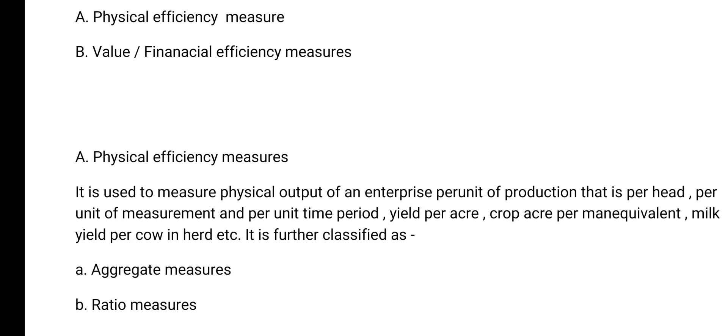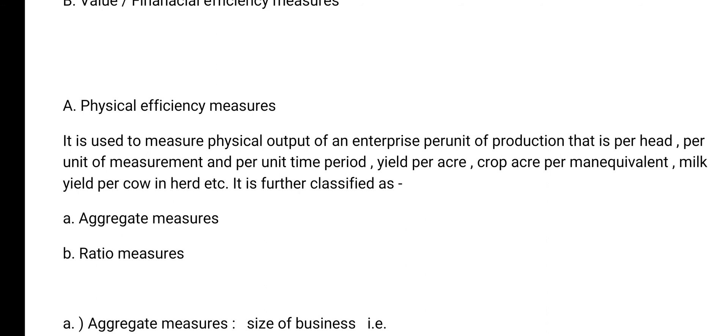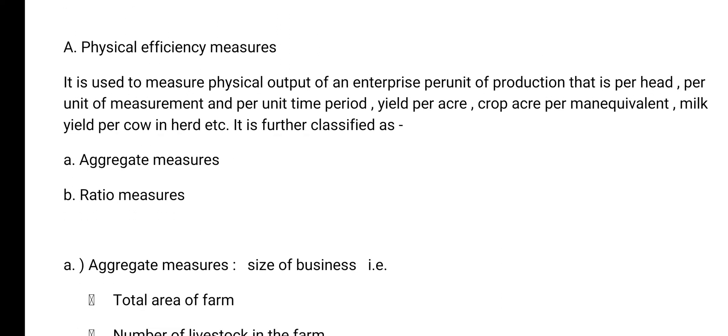First is physical efficiency measure. It is used to measure physical output of an enterprise per unit of production, that is per head, per unit of measurement and per unit time period, yield per acre, crop acre per man equivalent, milk yield per cow in herd etc. It is further classified as aggregate measures